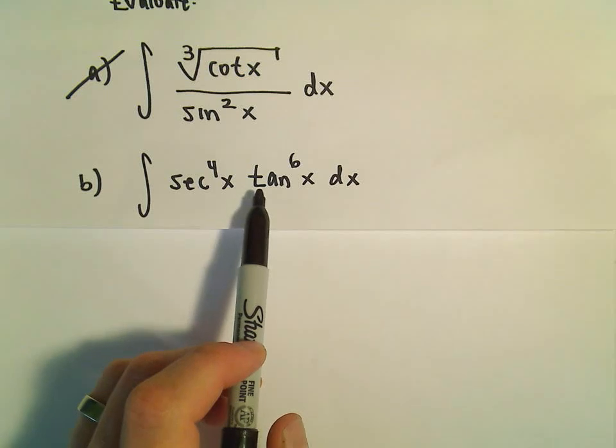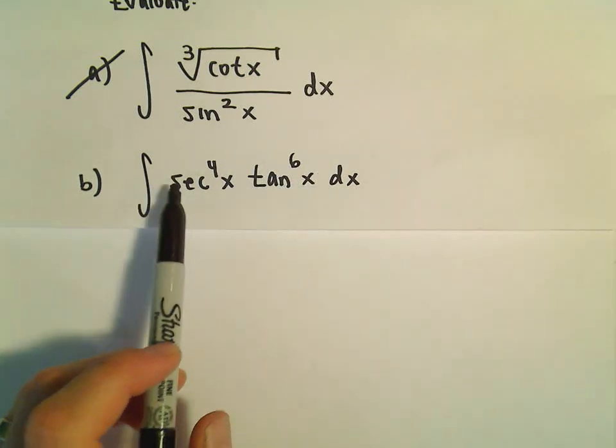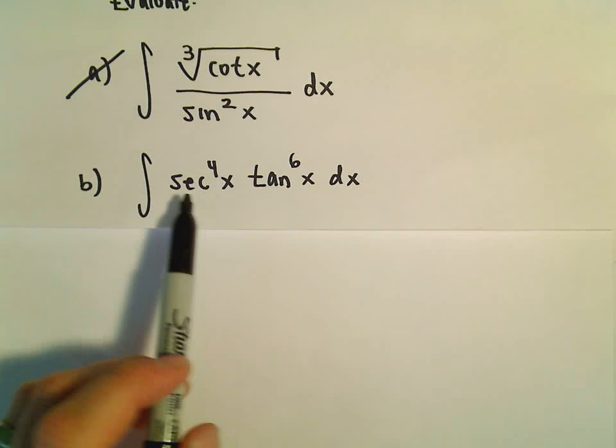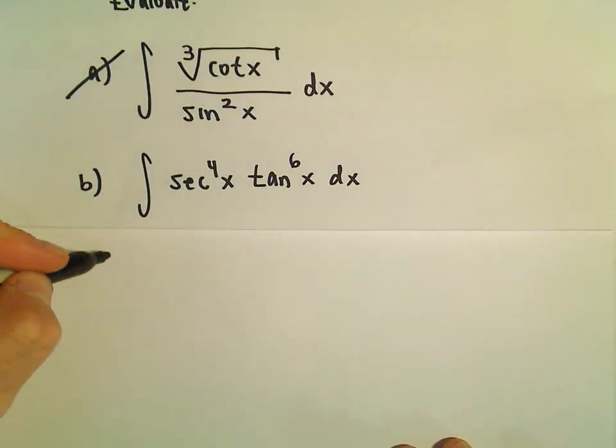Notice if we let u equal tangent x, du would be secant squared x dx. So that means we would still have secant squared left over,